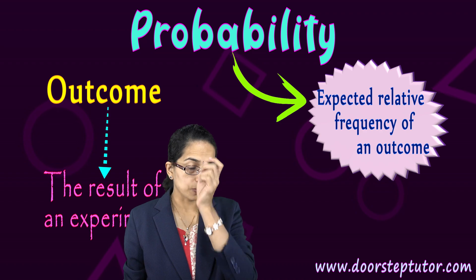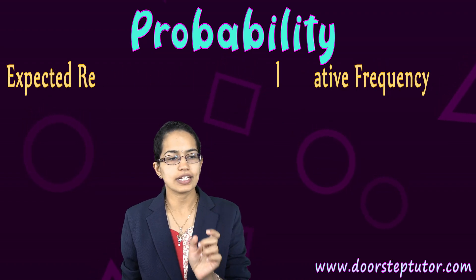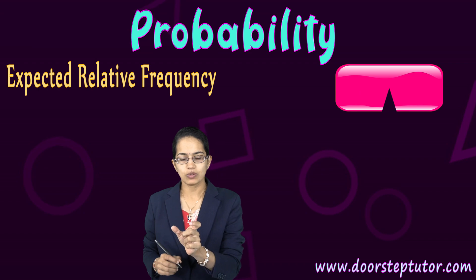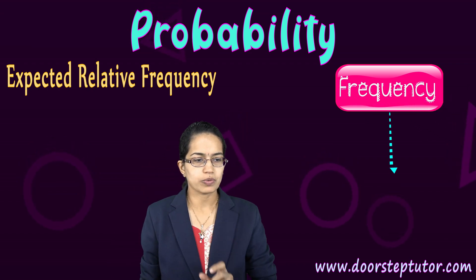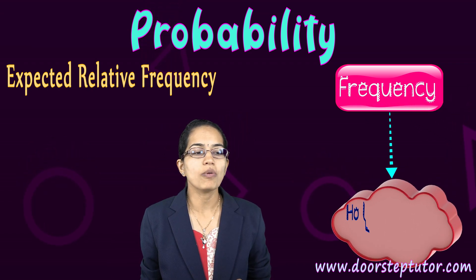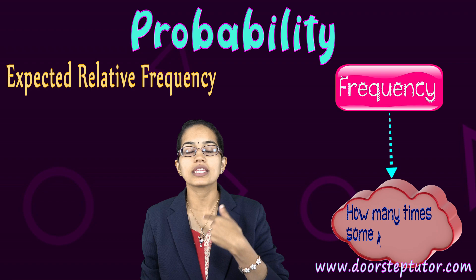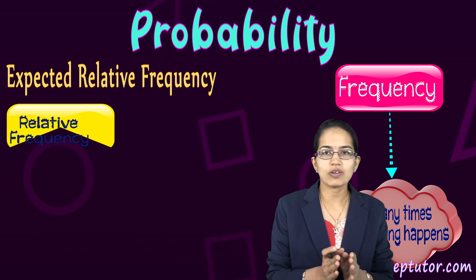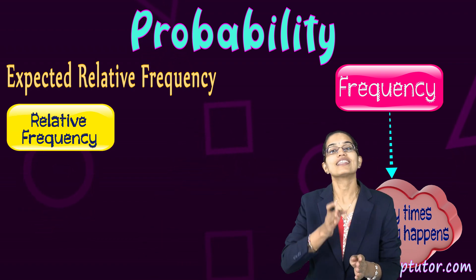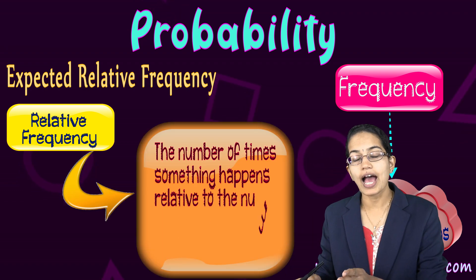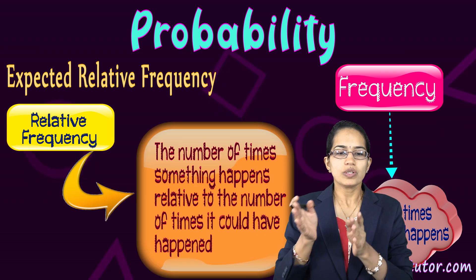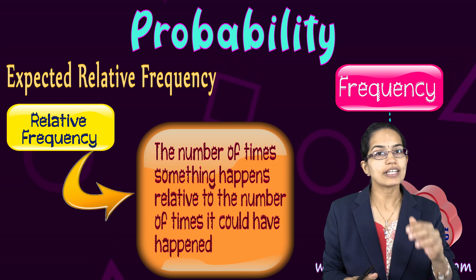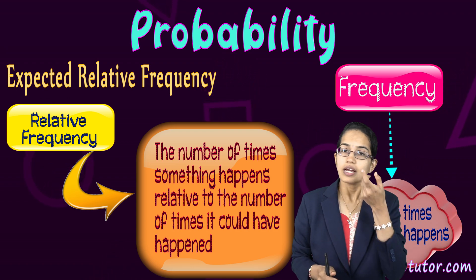The second thing I mentioned was expected relative frequency. Let's talk about frequency first. Frequency means how many times a thing repeats. Relative frequency means the number of times something happens relative to the number of times it could have happened.